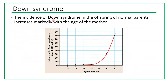The incidence of Down syndrome in the offspring of normal parents increases markedly with the age of the mother. If a mother is 20, 25, or 30 years old, the chances of having an infant with Down syndrome are very low. When the mother is over 40 — especially over 45 — the chances increase. However, even at age 45 it is only about 3% chance, though that is worse than the near 0% chance at younger ages.